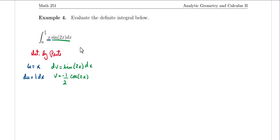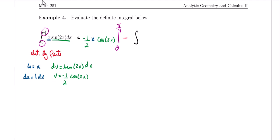So using integration by parts here, we're going to get u times v, so we're going to have negative 1/2 x times the cosine of 2x. But this time around, because it was a definite integral, we're going to need to evaluate our u times v at our limits of integration — evaluating from zero to π/4.